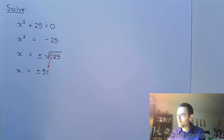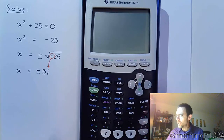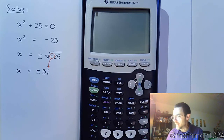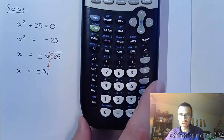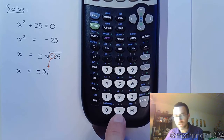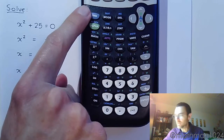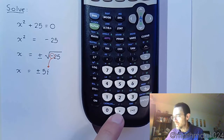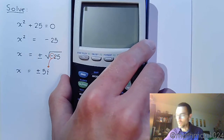Let's check this out on the calculator. Where i is — in case you forgot — i is down here at the very bottom, secondary to the decimal key. If you press second and then decimal, it gives you the i.